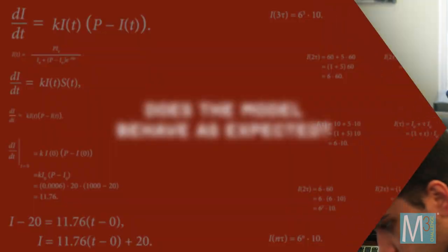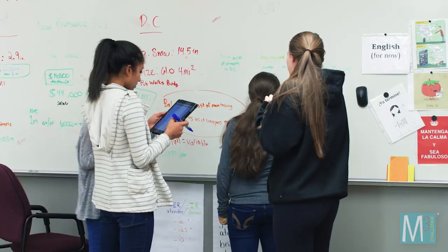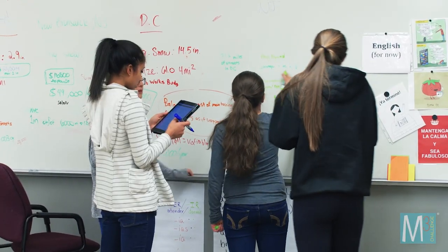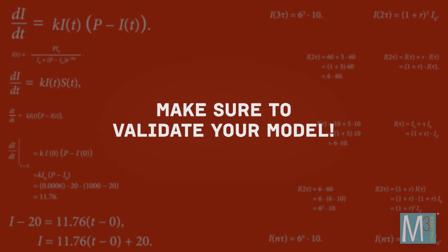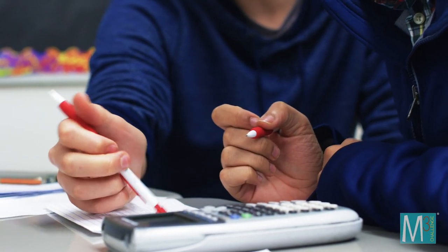Next, ask yourself: does the model behave as expected? We kind of went through each step, and once we finished one step, we went back to make sure that it was proved. Make sure to validate your model. You prove it using historical data, mainly because you don't know what's going to happen in the future, so you need to use historical data.